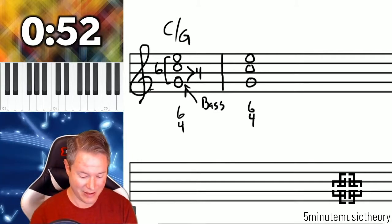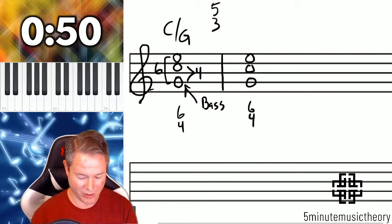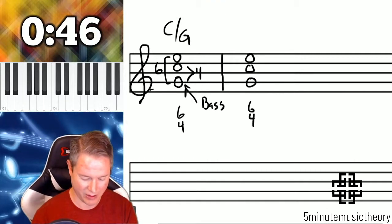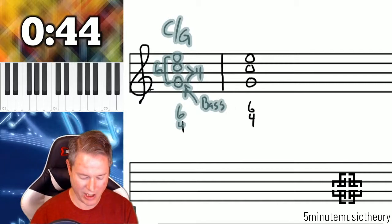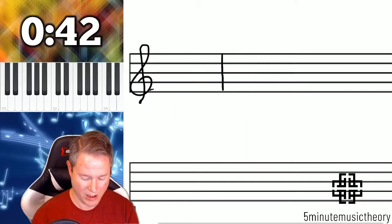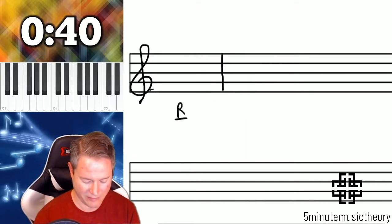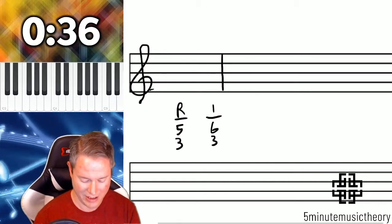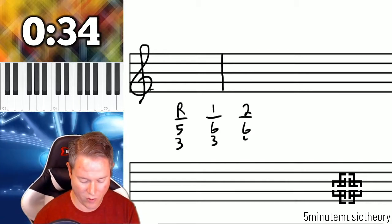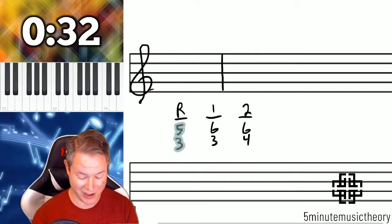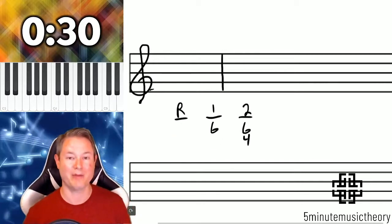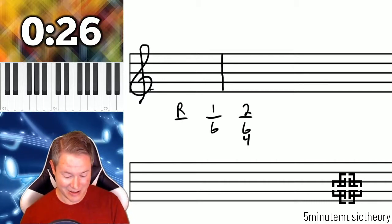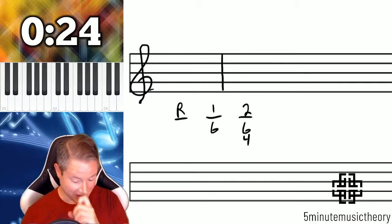So again, the regular versions, I'll just write them really quickly. Here's root position. You can't see all of that. Let's bump that down a little bit. Clear space. So root position is 5-3. First inversion is 6-3. Second inversion is 6-4. And then the abbreviated versions, which is the version that we'll see most commonly, is like this. Root position is blank. And then 6 is the first inversion. 6-4 is the second inversion.